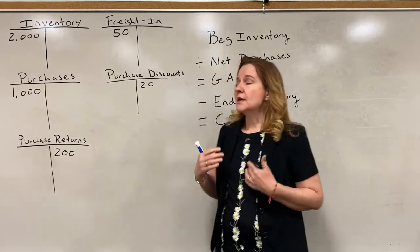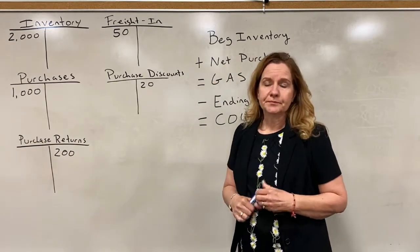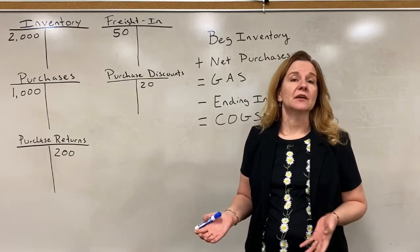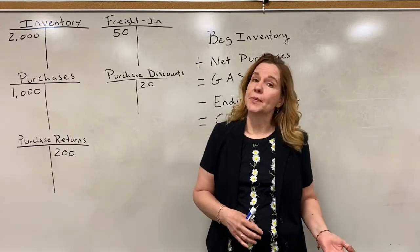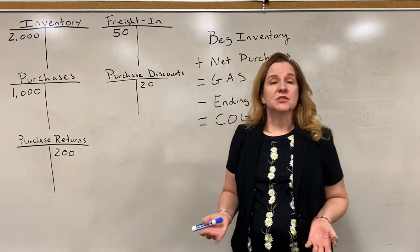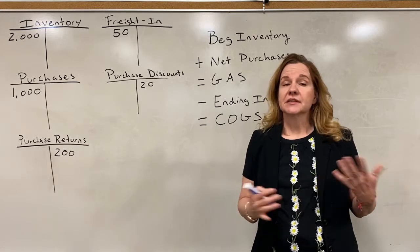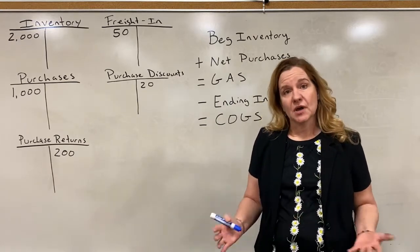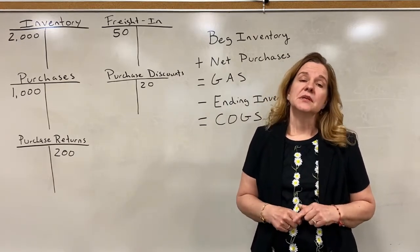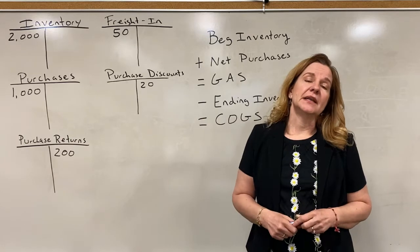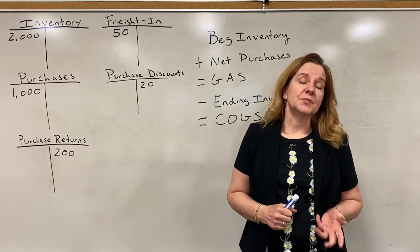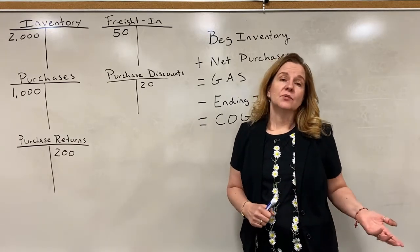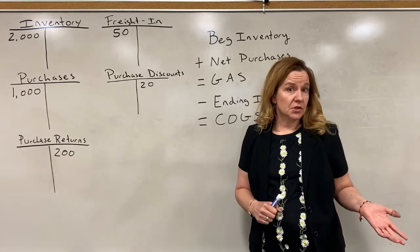When we sell inventory, we do not hit the inventory account like we would with the perpetual method. Instead, we just hit sales and cash or accounts receivable, and we do not reduce our inventory account. So it has to be done at the end of the period — we reduce inventory and record cost of goods sold.